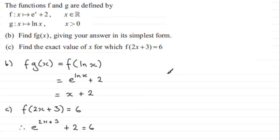So if we just come down here next, what I'd want to do is to subtract 2 from both sides, so I therefore have e to the power 2x plus 3 is equal to 6 take away 2, which we know is 4.